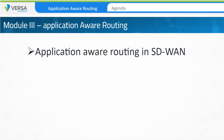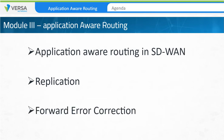This session is changing the dynamics of routing by using application awareness. Subsequently, we will discuss two important features of application-aware routing known as replication and forward error correction, or FEC. Before we discuss application-aware routing, let's review how traditional routing works.